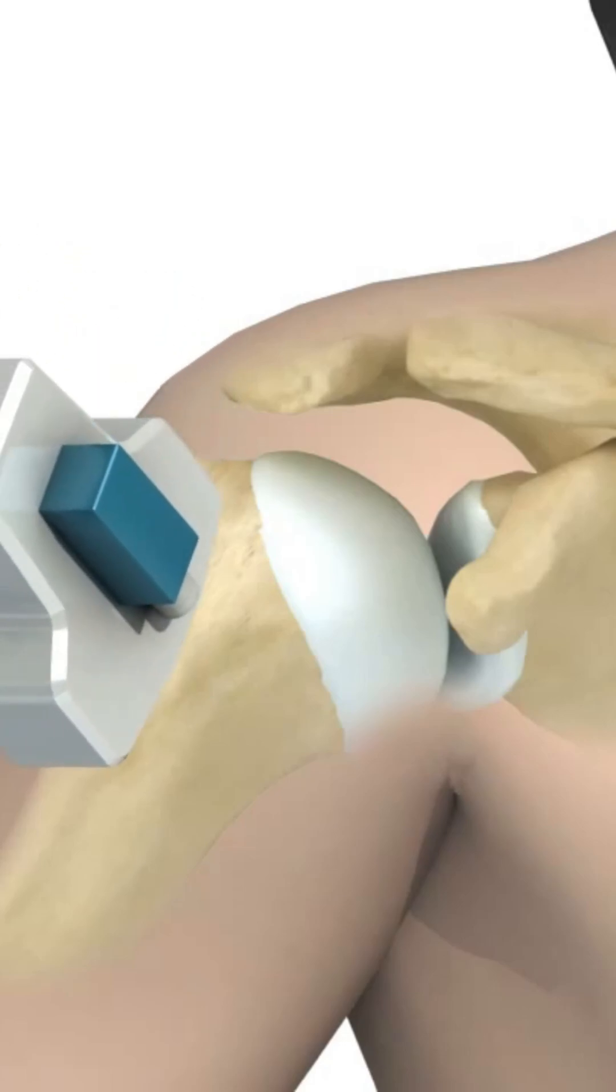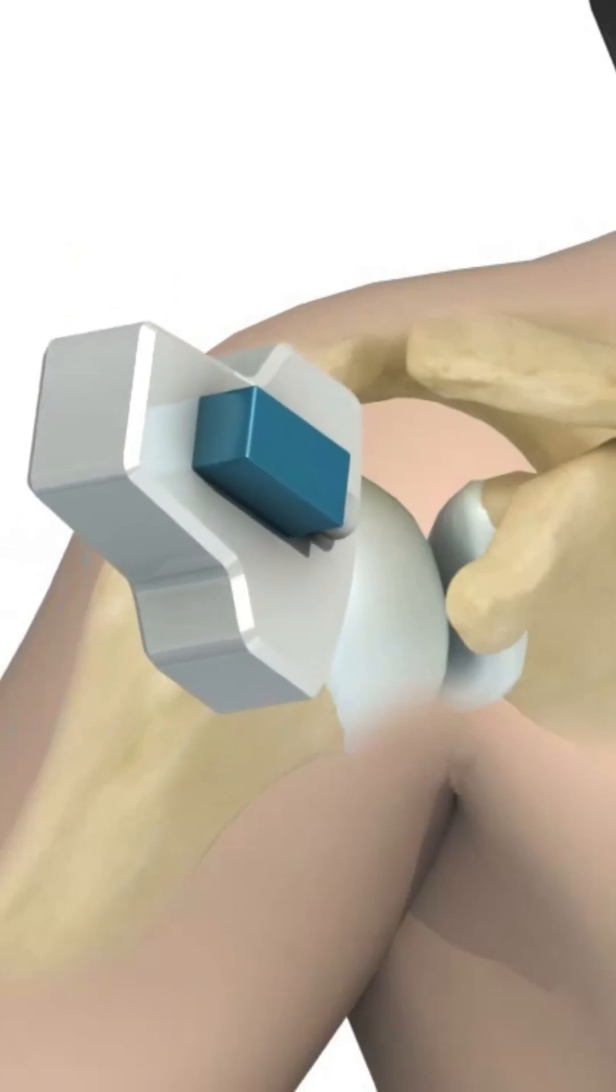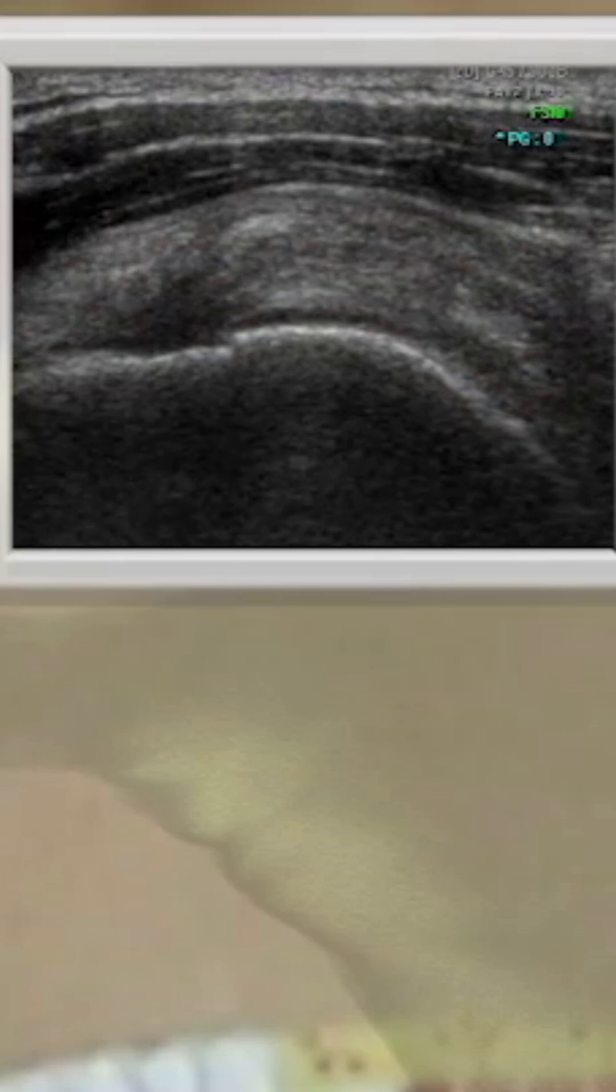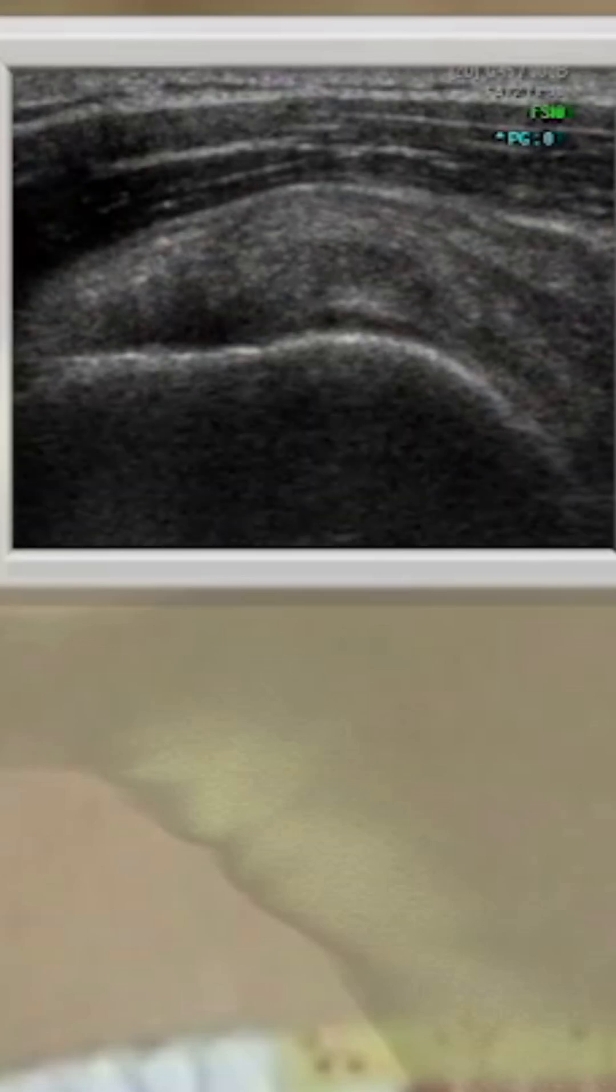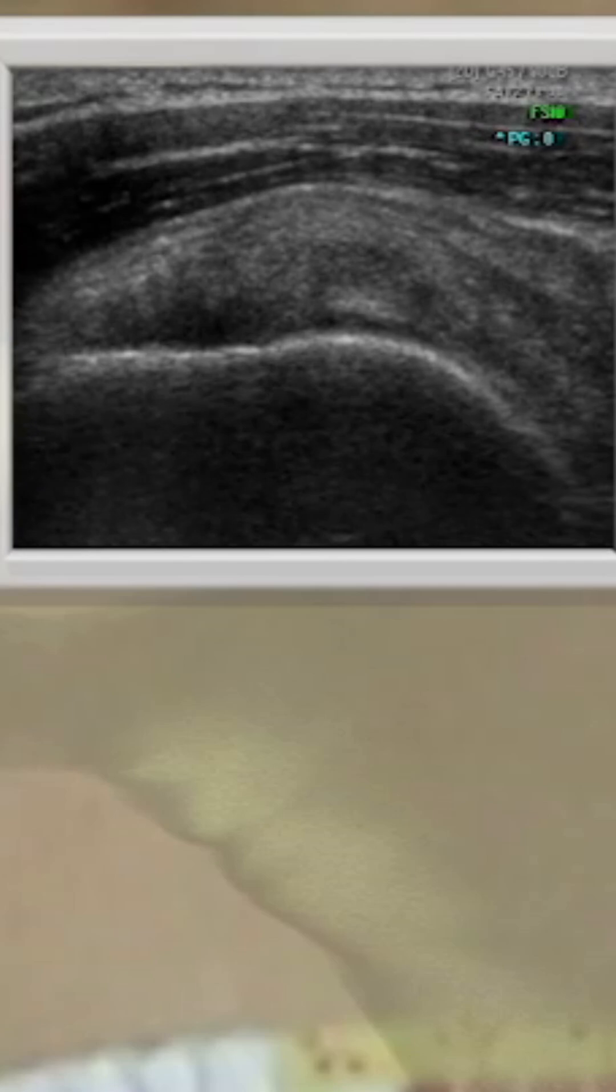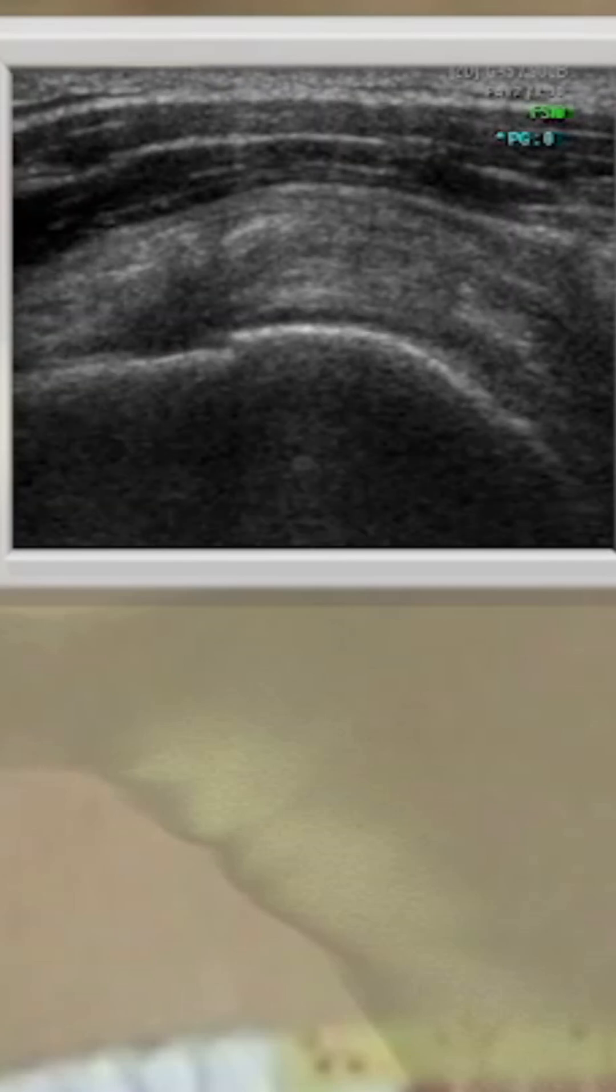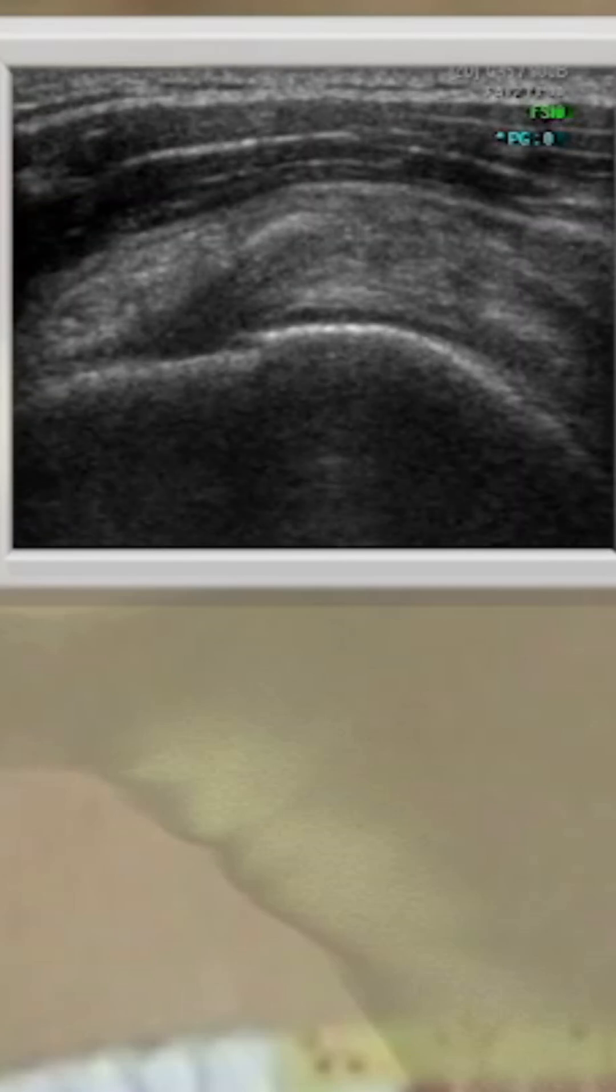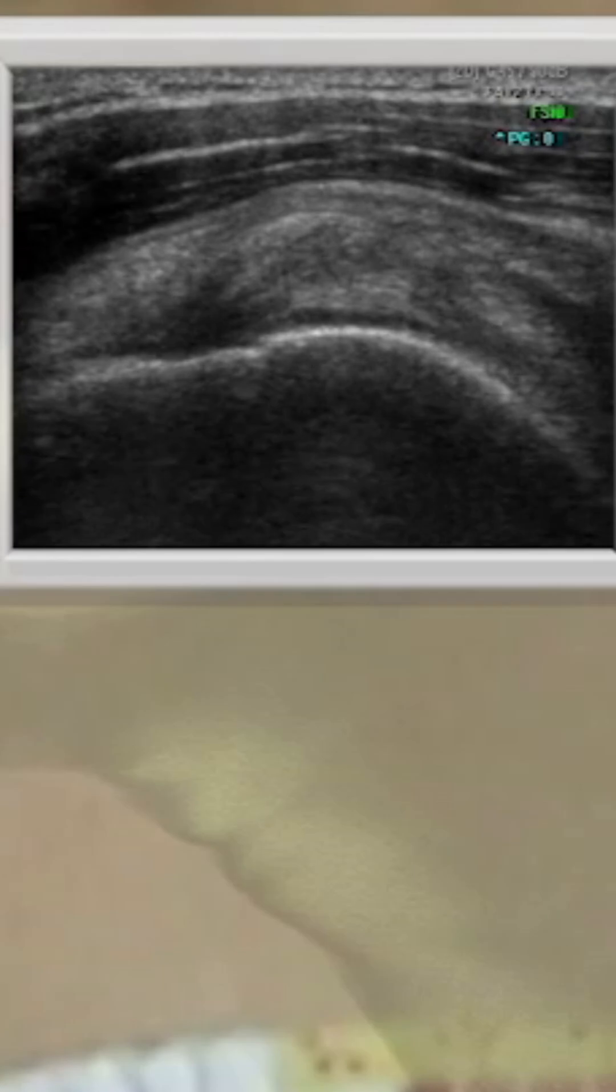Medical ultrasound plays a crucial role in the diagnosis and treatment of shoulder joint disorders. With advancements in medical technology, the use of ultrasound in various aspects of shoulder joint disorders is expected to become increasingly important. Currently in use and promising for the future are the following areas.